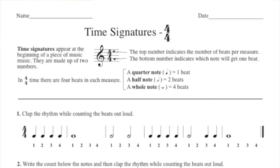Time signatures appear at the beginning of a piece of music and they're made up of two numbers that sit on top of each other. And how we verbalize that time signature is by saying the top number first and then the bottom number second. So 4-4.